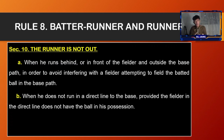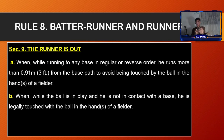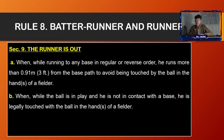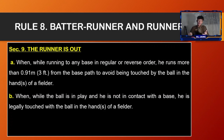Letter B: when a runner does not run in the direct line to the base, provided a fielder in the direct line does not have the ball. That concludes our discussion of rule number eight. I hope you learned something from our discussion about the rules of softball from number five to eight. Next meeting we will discuss rules nine through twelve.